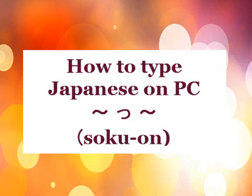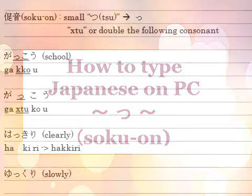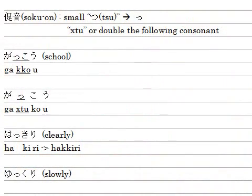みなさん こんにちは。Kazueです。 How to type Japanese on the PC? Today's lesson is 速言. You know 速言 is っ.